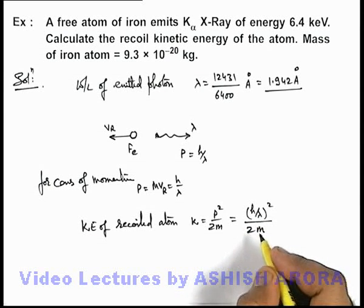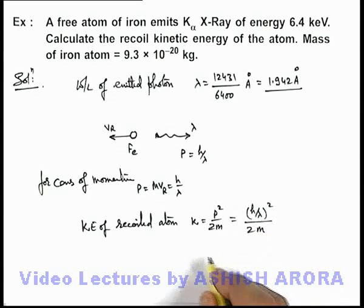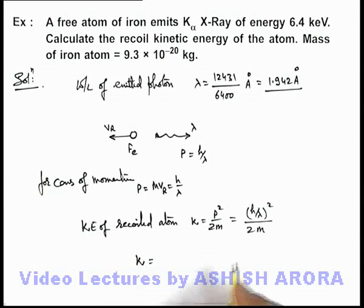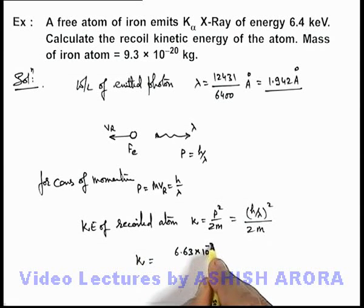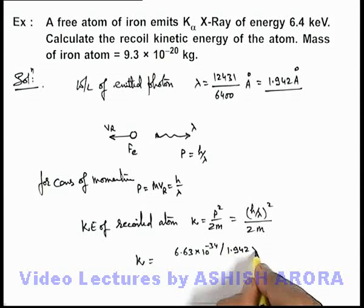If we substitute the values here, in this situation we can easily get the value of kinetic energy equal to... The value of Planck's constant, we know, is 6.63 multiplied by 10 to the power minus 34, divided by the wavelength, we know it is 1.942 into 10 to the power minus 10 meters.